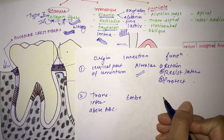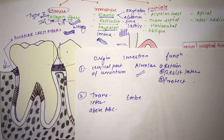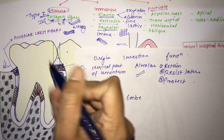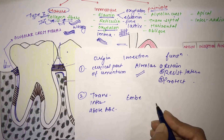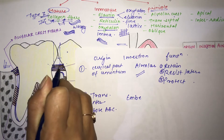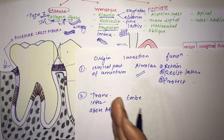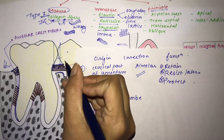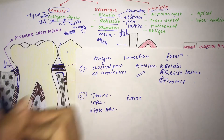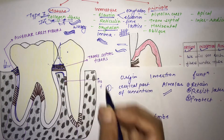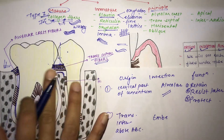Functions of the transseptal fiber: (1) It can be reconstructed even after destruction of the alveolar bone in periodontal disease. (2) It is the main reason for relapse in orthodontics — these fibers pull teeth back to their original position after orthodontic treatment if retainers are not used properly.